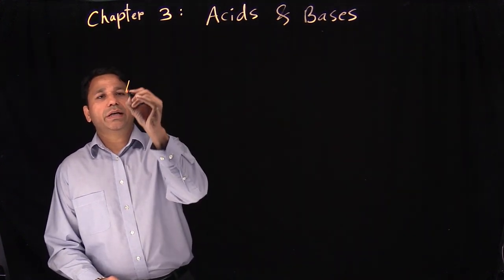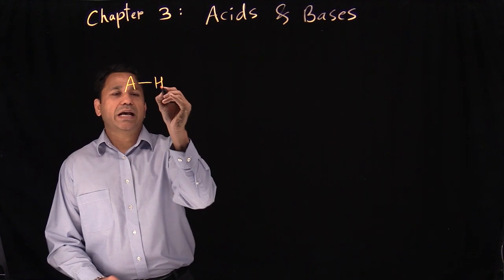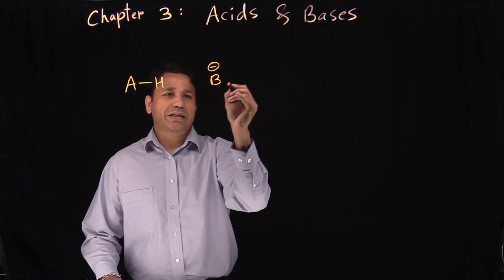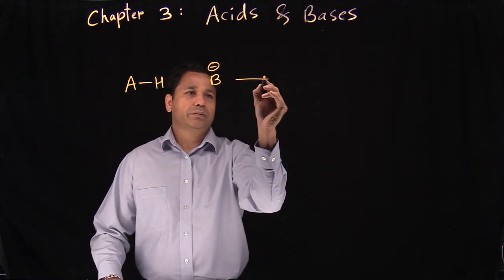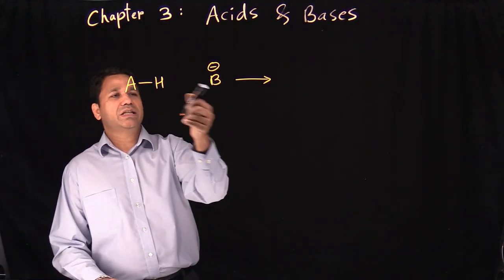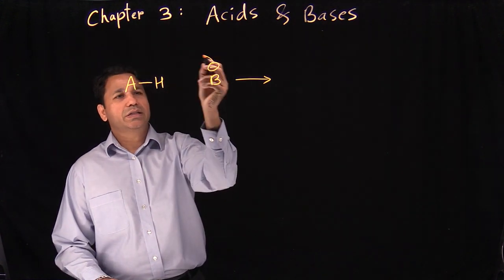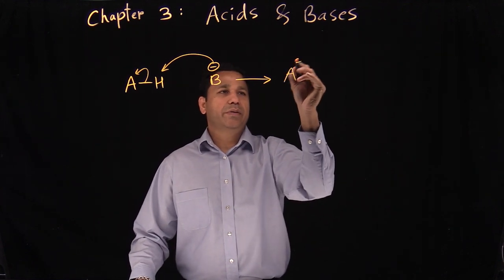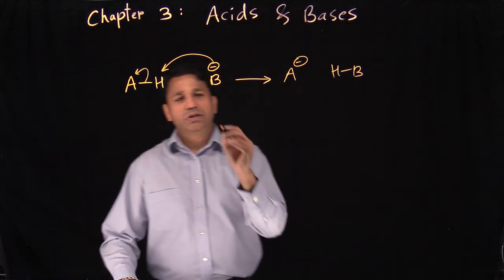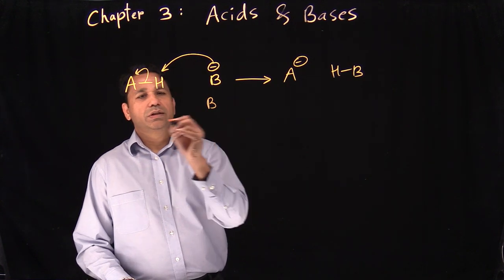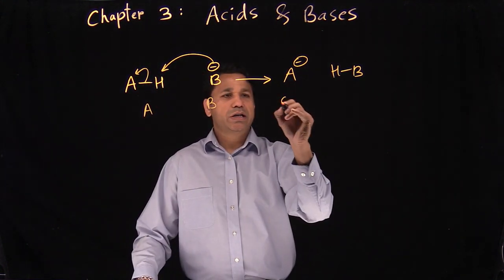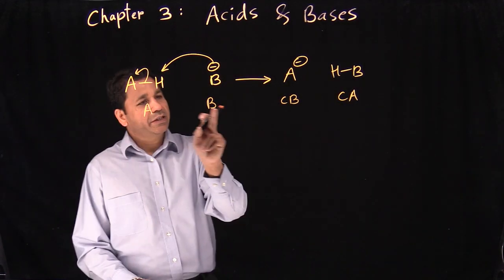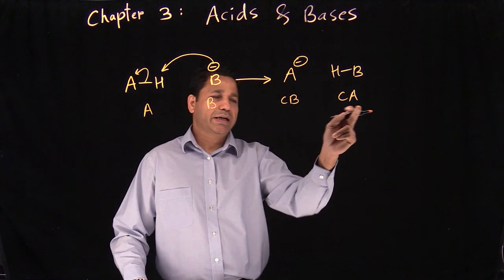So to summarize: anything with a hydrogen is an acid, and anything with an electron pair or a negative charge is your base. When you mix acid and base together, the base picks up the hydrogen, the electron pair goes on A — that becomes A minus — and HB forms. On the reactant side: base and acid. On the product side: conjugate base and conjugate acid.